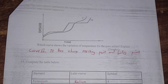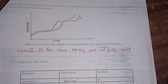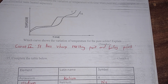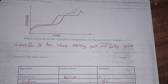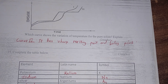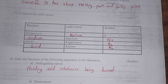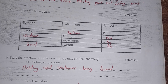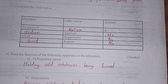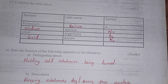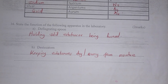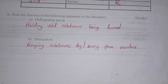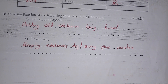Which curve shows the variation of temperature of a pure solid? It's curve 2, because it has a sharp boiling point. Completing the element symbols table: sodium — Latin name natrium, symbol Na. Silver — argentum, symbol Ag. Gold — aurum, symbol Au. The function of a deflagrating spoon is holding substances being heated; a desiccator is used for drying substances.